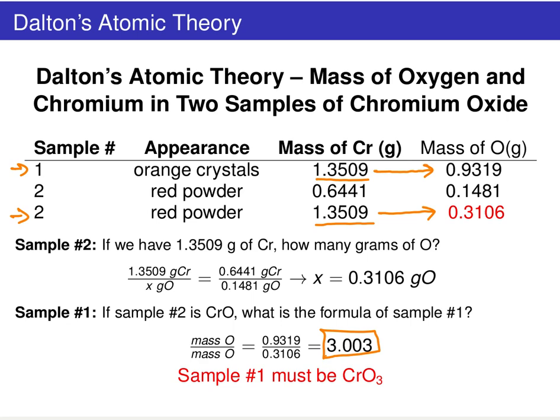We've got a value that's something close to three. So in sample one, the ratio of chromium to oxygen compared with sample two...